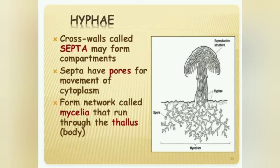In this picture there is a cross wall called septa. Septa may form compartments, and septa have pores that allow movement of cytoplasm. Hyphae form a network called mycelia that run through the thallus, which is the body part of the fungus.